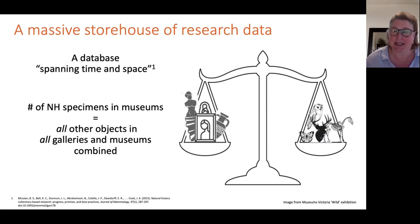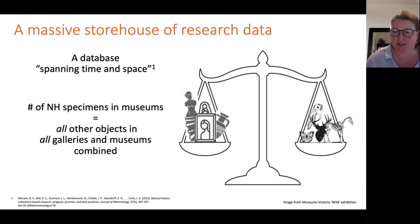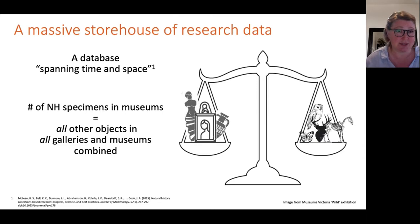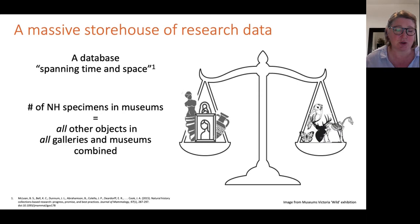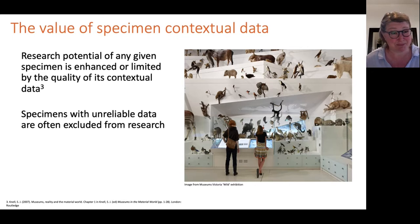In 2015, Brian MacLean and his team found that museum specimens were utilized in 25% of papers published in the Journal of Mammalogy from 2005 to 2015. It's estimated there are about three billion natural history specimens in the world's museums and university collections, which is roughly equal to all the other objects in all the other galleries and museums combined — a remarkably large number.